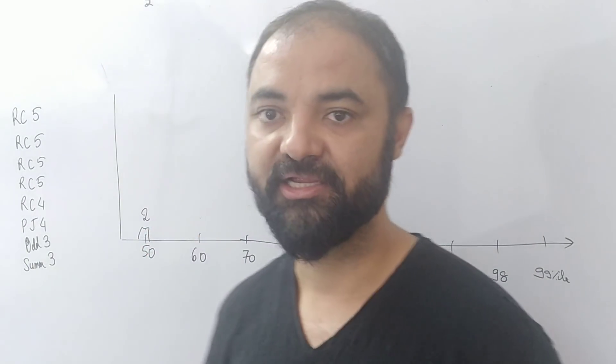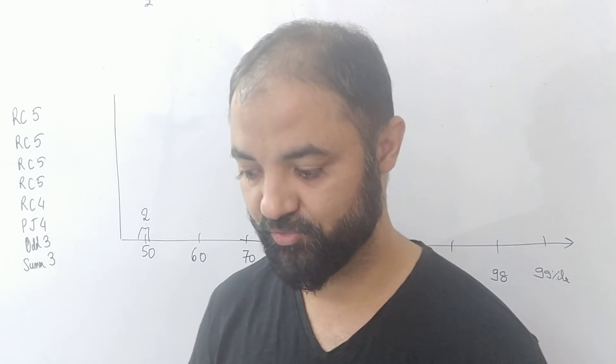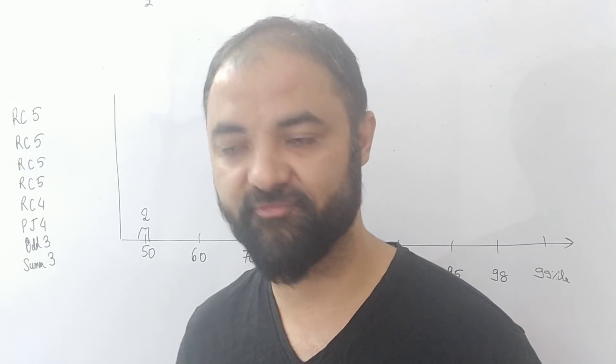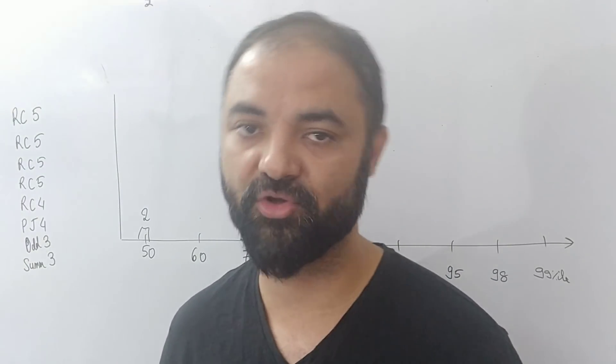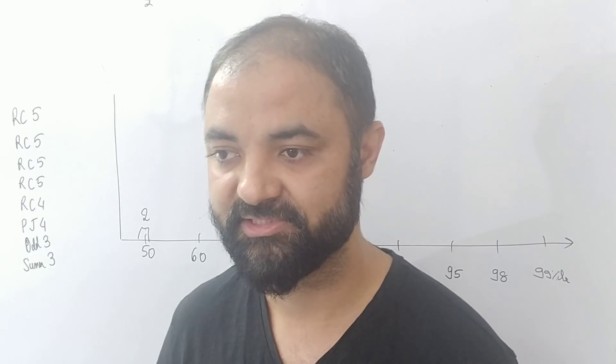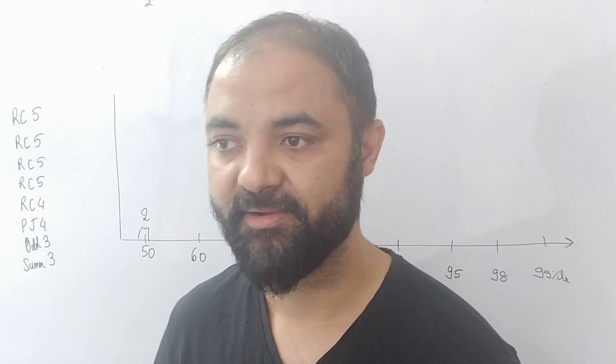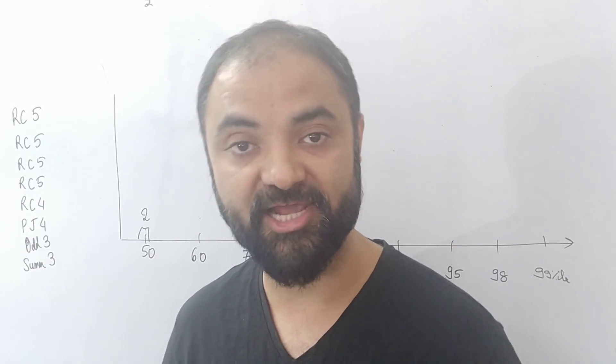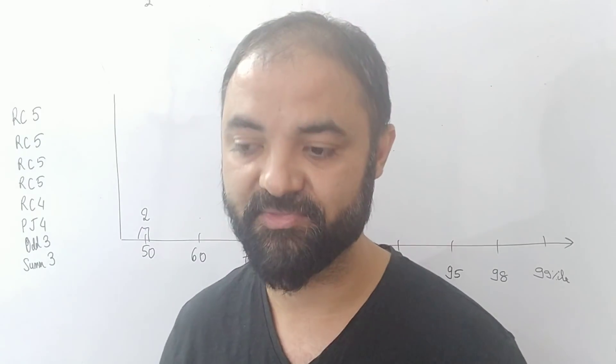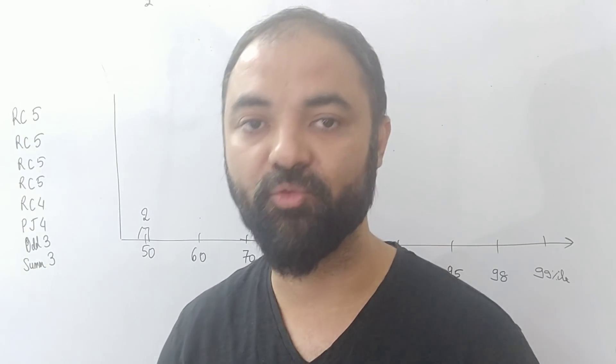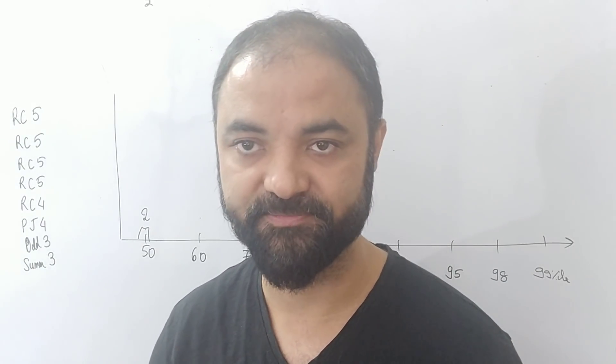So 50 percentile is 2 questions correct, which means you have to attempt around 5-4 questions: 2 right, 2 wrong, you're getting 50 percentile. But you are able to beat 1 lakh people out of 2 lakh people who give the exam. 1 lakh people you are able to beat only by solving 2 questions correctly.